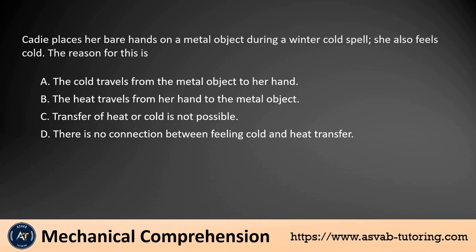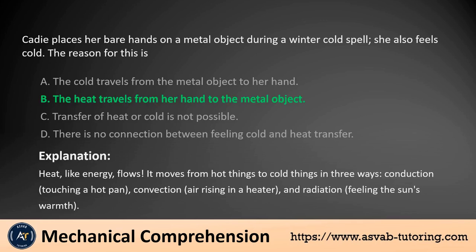Katie places her bare hands on a metal object during a winter cold spell. She also feels cold. The reason for this is: A. The cold travels from the metal object to her hand. B. The heat travels from her hand to the metal object. C. Transfer of heat or cold is not possible. D. There is no connection between feeling cold and heat transfer. The answer is B. Heat, like energy, flows — it moves from hot things to cold things in three ways: conduction (e.g., touching a hot pan), convection (e.g., air rising in a heater), and radiation (e.g., feeling the sun's warmth).